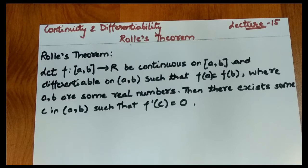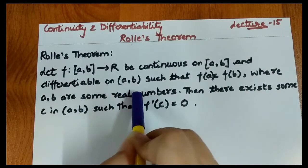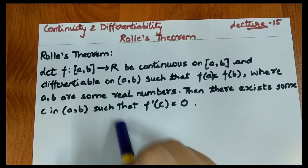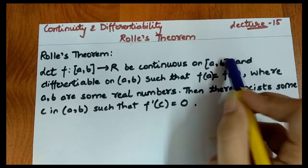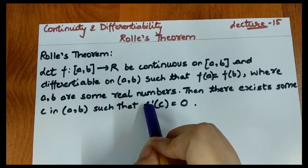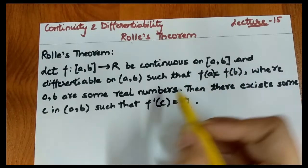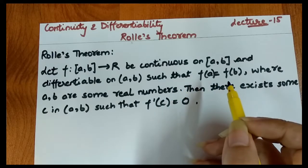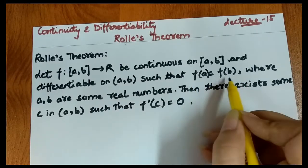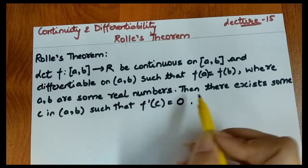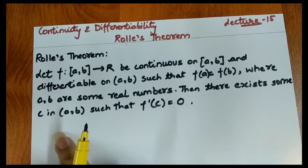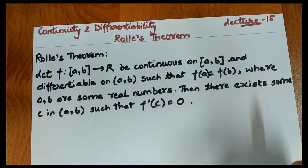Rolle's Theorem says that if a function has domain [a, b], it is continuous on [a, b] — using closed brackets — and differentiable on (a, b) — using open brackets, excluding end values. If the function values at the two endpoints a and b are equal, then there exists a point c in (a, b) where the derivative is zero.